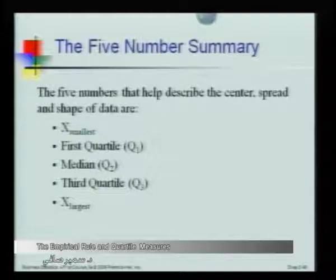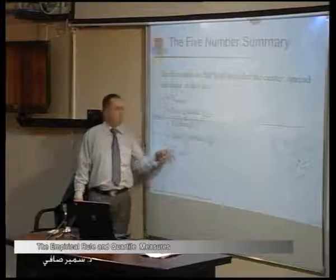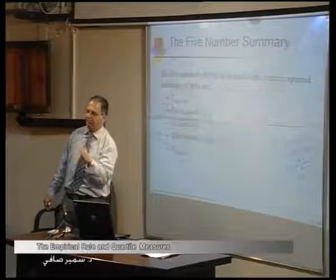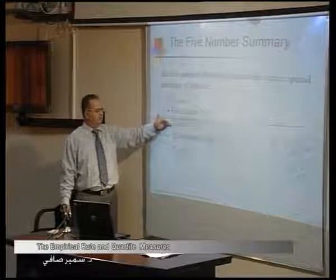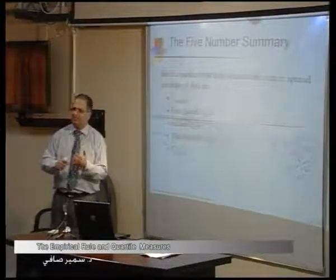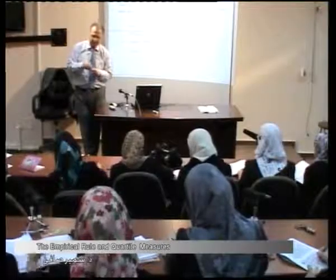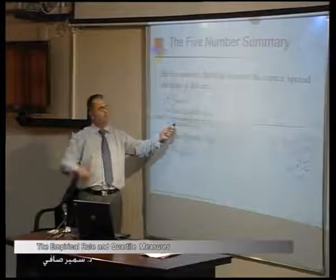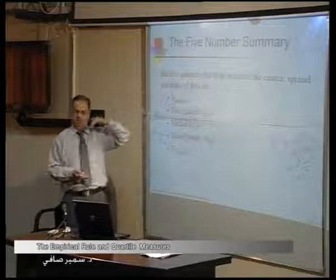The five-number summary consists of: the smallest value, Q1 (first quartile), the median (Q2), Q3 (third quartile), and the largest value. Using these five statistics, you can describe the center — from the median, the spread — from IQR and the range, and the shape of the distribution.